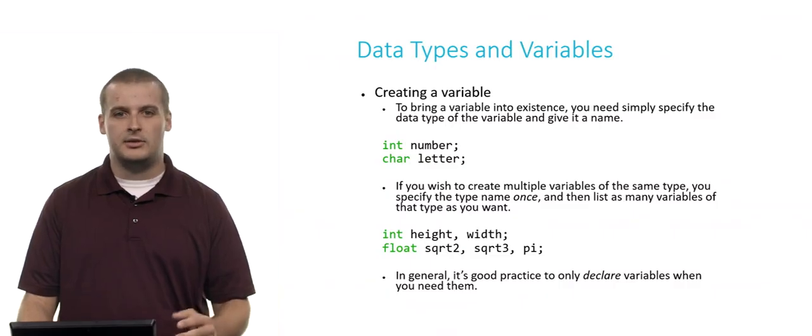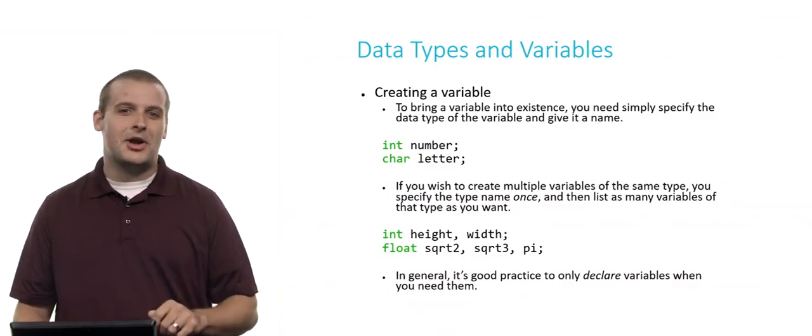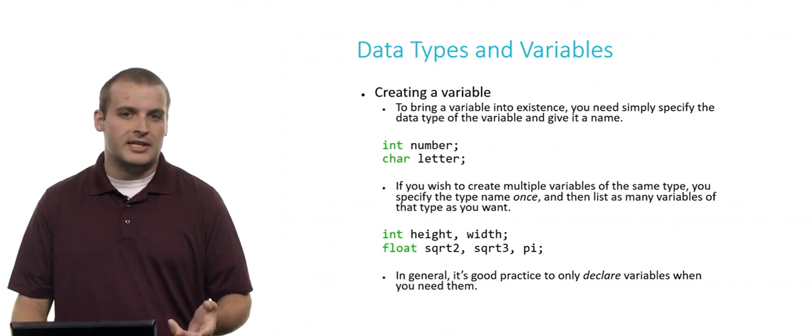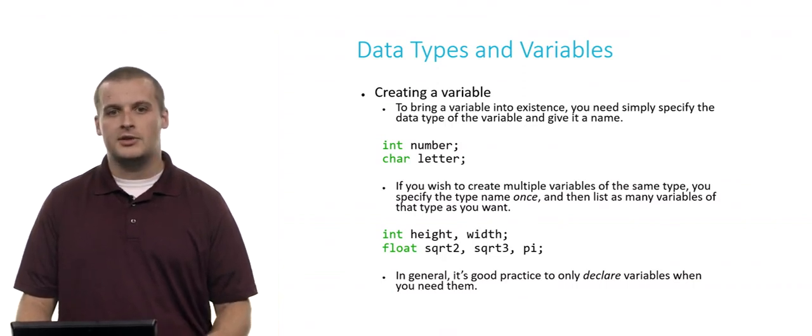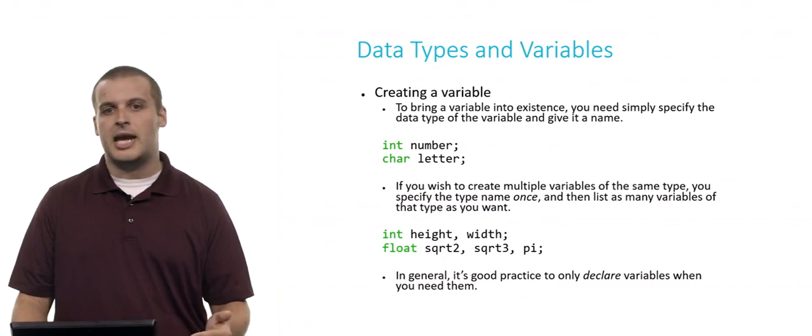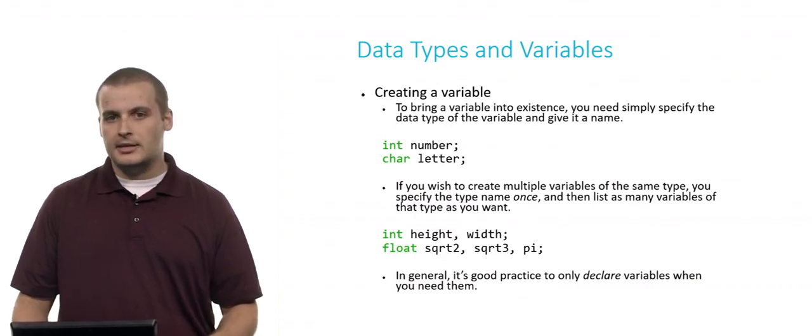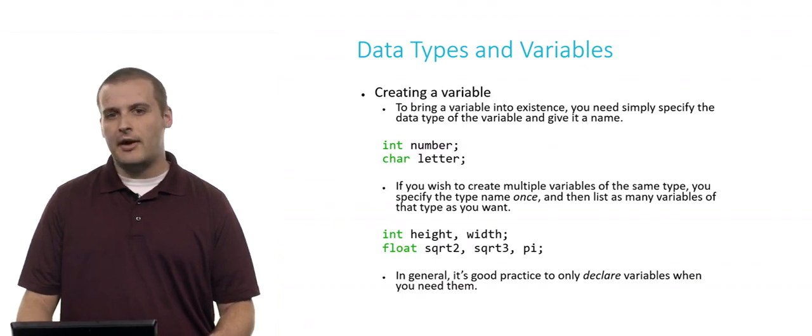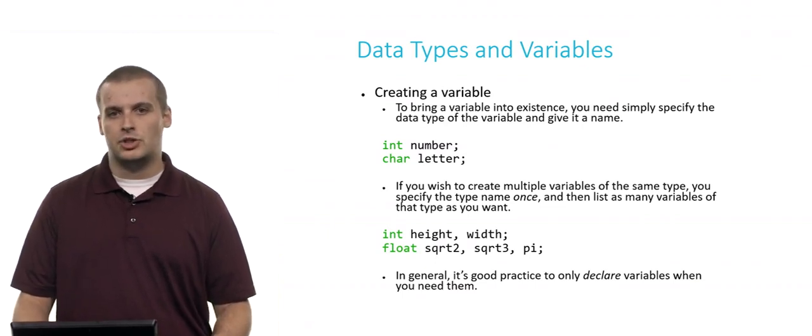If you want to create a variable, all you need to do is two things. First, you need to give it a type. The second thing you need to do is give it a name. Once you've done that and slapped a semicolon at the end of that line, you've created a variable. So here's two examples, int number semicolon, char letter semicolon. What have I done here? I've created two variables. The first, the variable's name is number, and number is capable of holding integer type values, because its type is int. Letter is another variable that can hold characters, because its data type is char. Pretty straightforward, right?